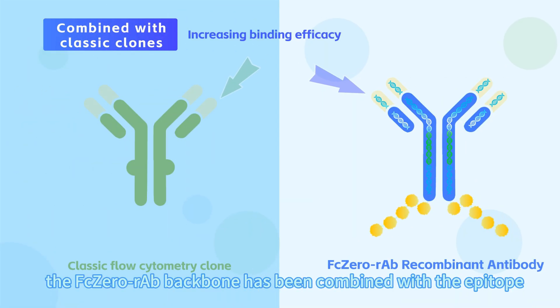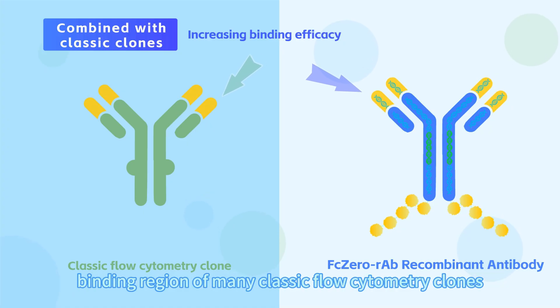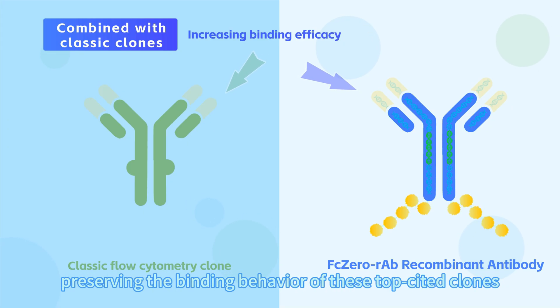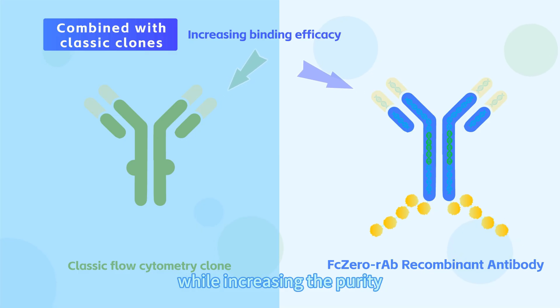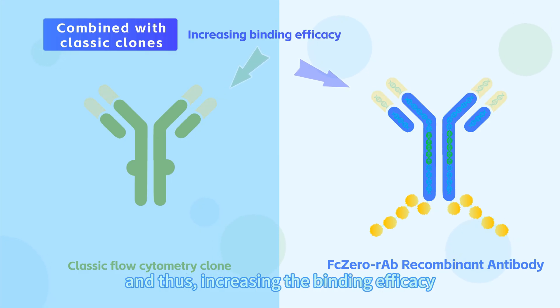Fourth, the FCo-RAB backbone has been combined with the epitope binding region of many classic flow cytometry clones, preserving the binding behavior of these top-cited clones while increasing the purity and thus increasing the binding efficacy.